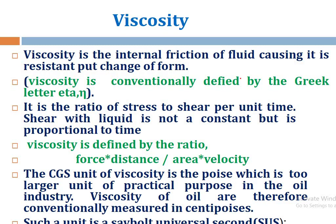Sixth, viscosity: viscosity is the internal friction of a fluid, causing resistance to flow. It is commonly defined by the Greek letter eta (η). It is the ratio of stress to shear rate per unit time. Viscosity is defined as force times distance divided by area times velocity. The SI unit of viscosity is the poise, which is too large for practical purposes; in the oil industry, viscosity is measured in centipoise, or in Saybolt Universal Seconds (SUS).